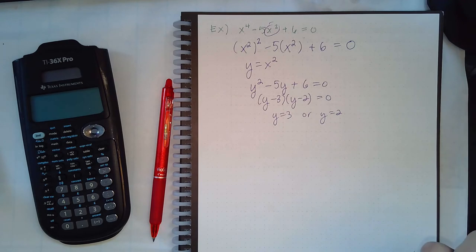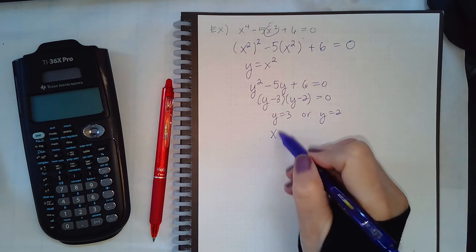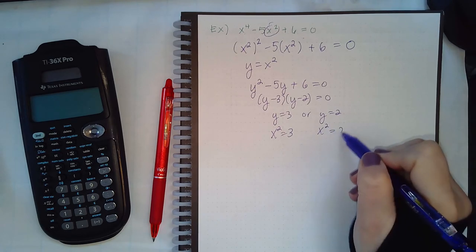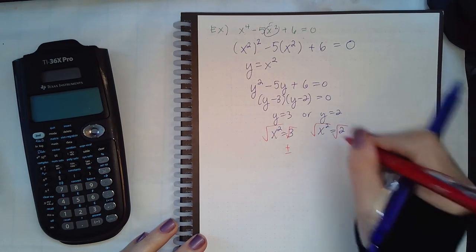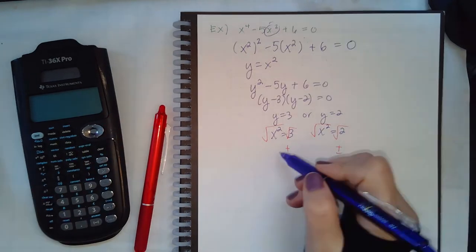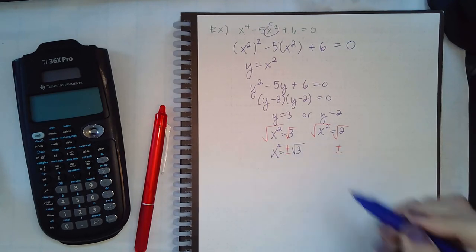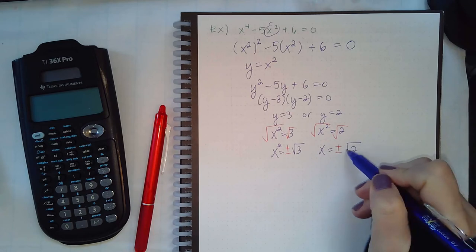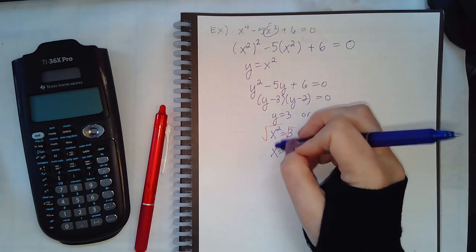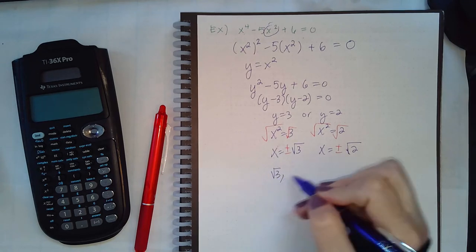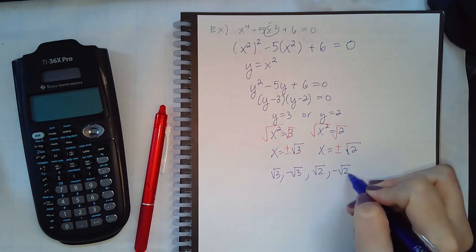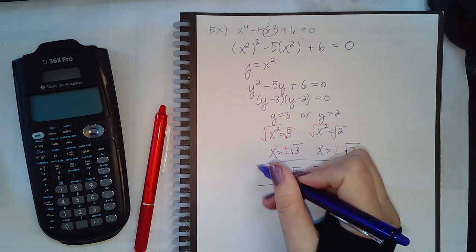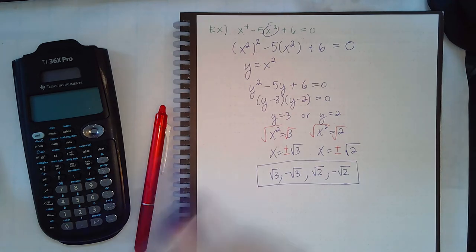But then again, I have to go back and solve for x. So put back what y represents. And then in order to solve for x, you need to apply the square root, which means you get two answers over there. And apply the square root, which means you get two answers on the other equation. This does not simplify, and neither does this. So we have four answers all together. We have square root of 3, negative square root of 3, we have square root of 2, and we have negative square root of 2. There were actually four solutions to this problem, which makes sense because you were solving an x to the 4th power equation to begin with.